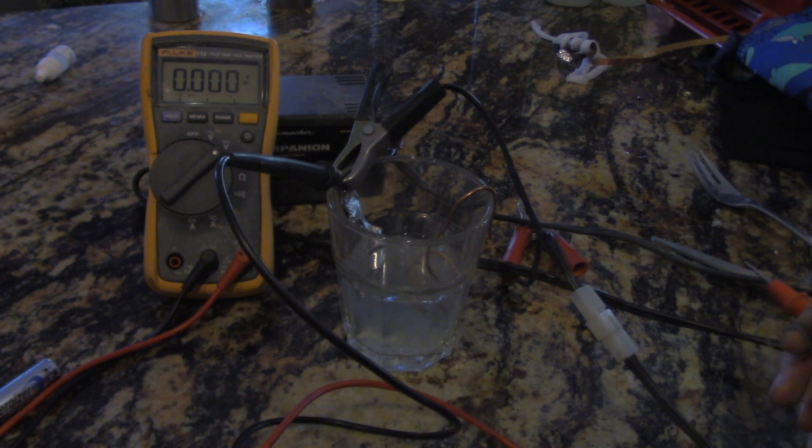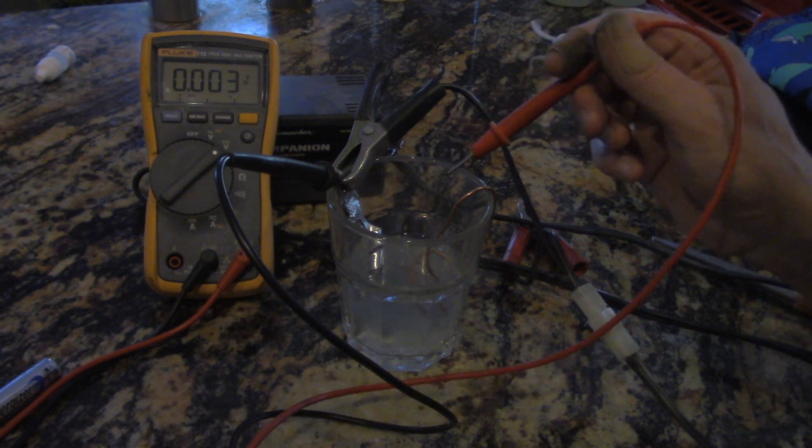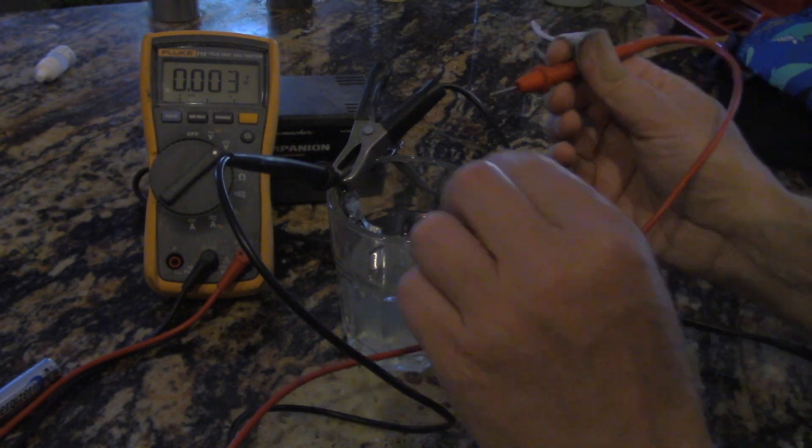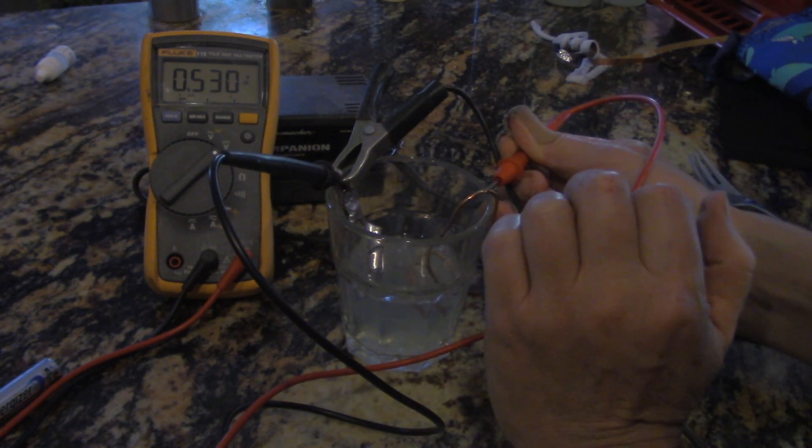So here's a mock-up of the previous battery. Basically we have some salt water and you have two different metals, in this case I'm going to use aluminum and copper, and if we check the voltage here we've got about a half a volt.